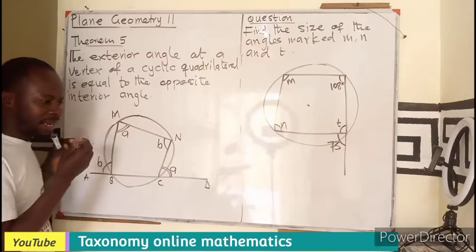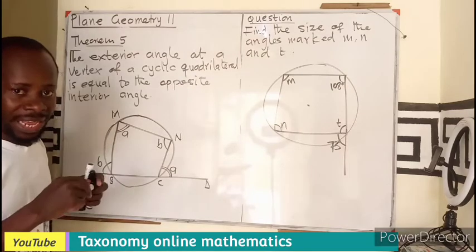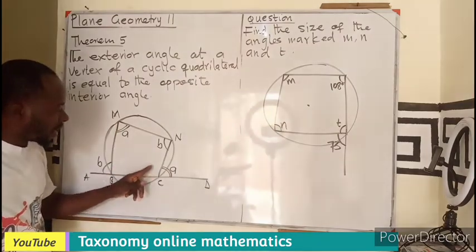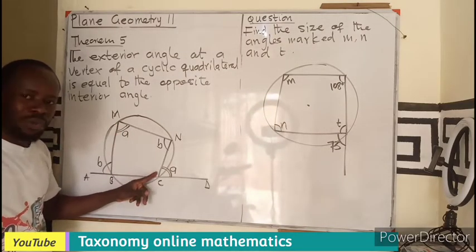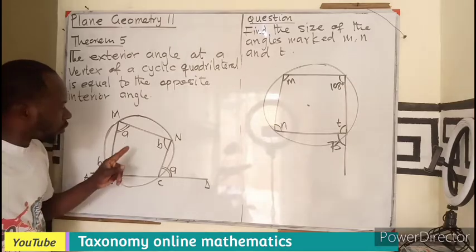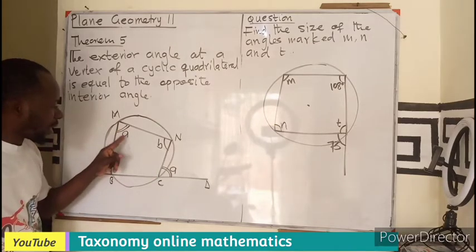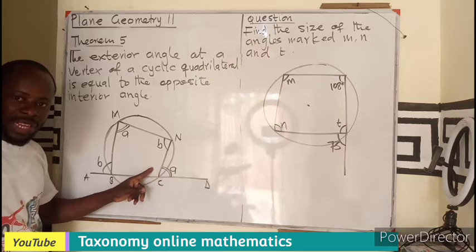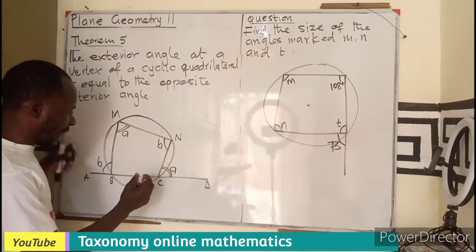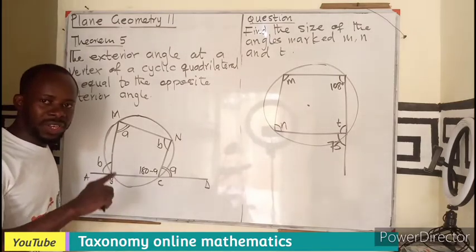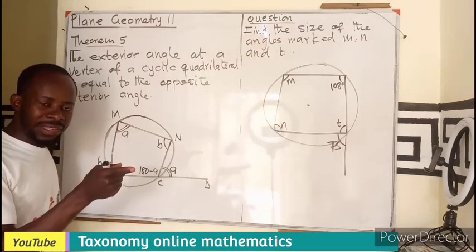You can remember in the third or fourth theorem, we say that the opposite angle of a cyclic quadrilateral add up to 180. So it means that this angle here is 180 minus A. If I have here 180 minus A, we also know that angles on a straight line add up to 180.